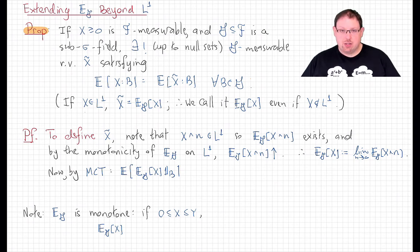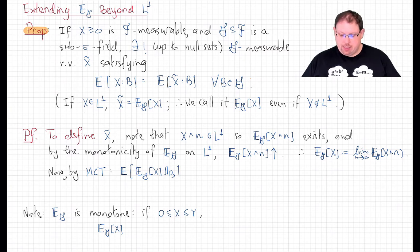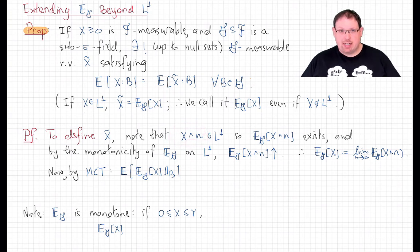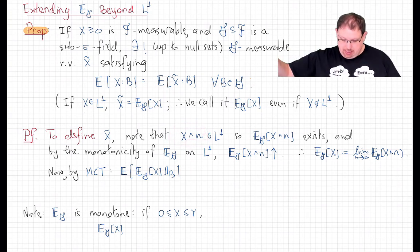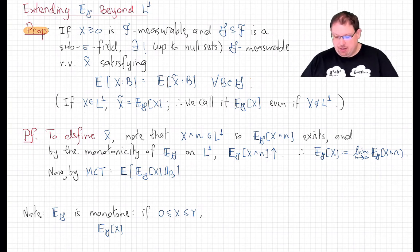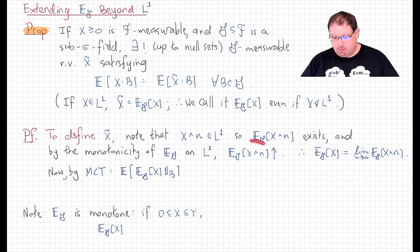Here's how this works. To define it, we perform an appropriate cutoff. Given any non-negative measurable X, if we take min(X, N) — so that when it reaches height N it just stays there — that is L1, since we're in a probability space. And that means we can define the conditional expectation of that L1 random variable onto the sub-sigma field G.